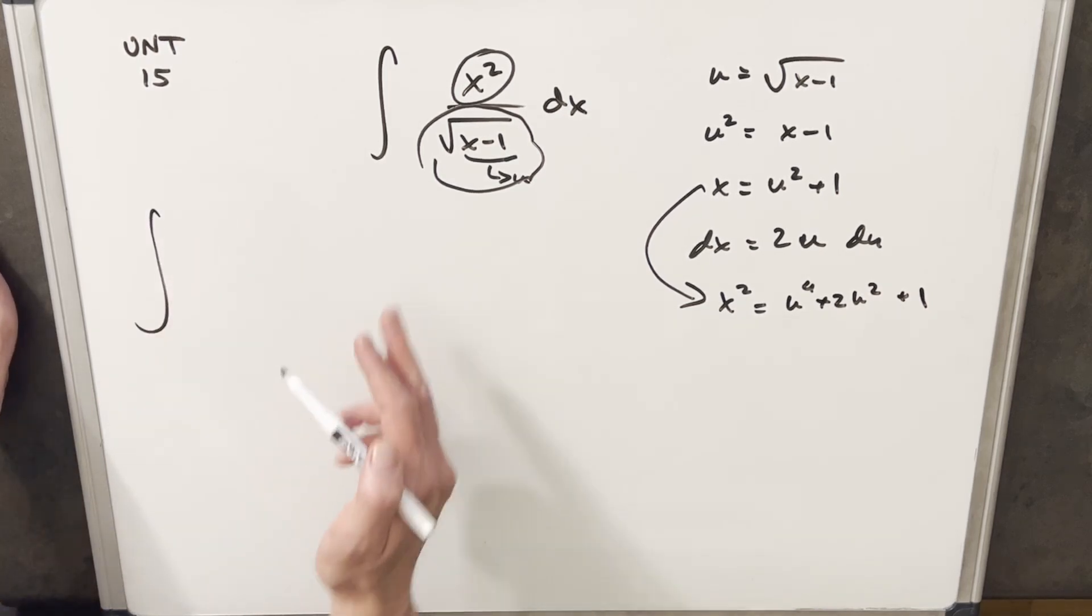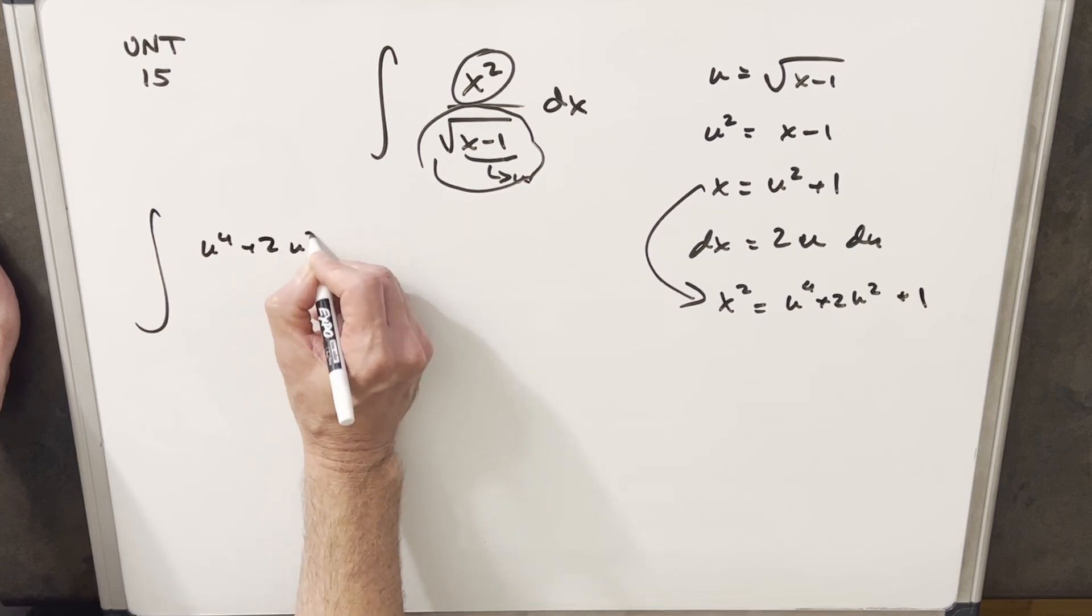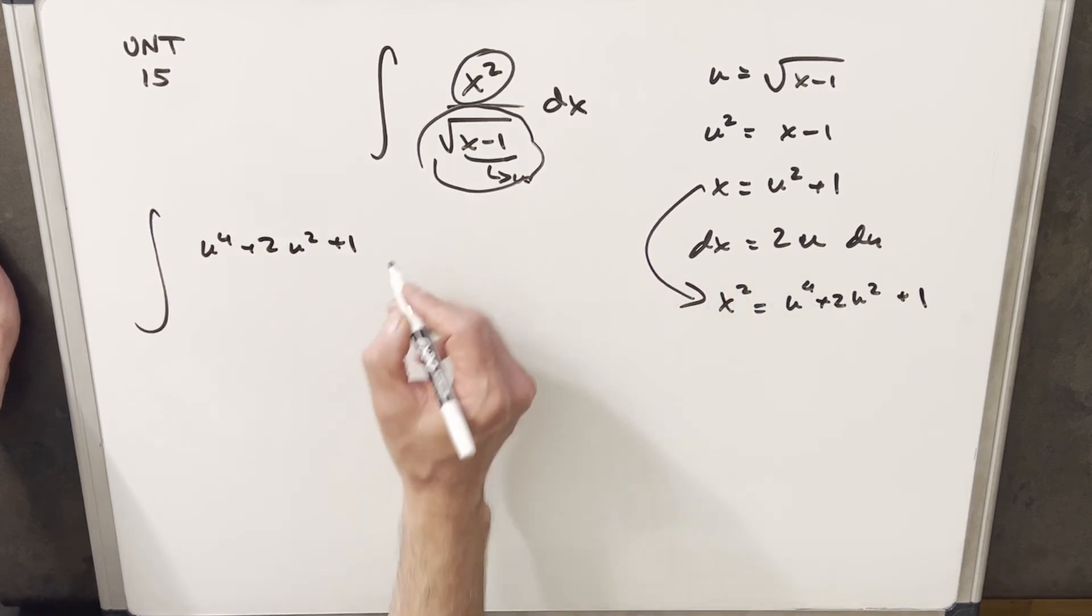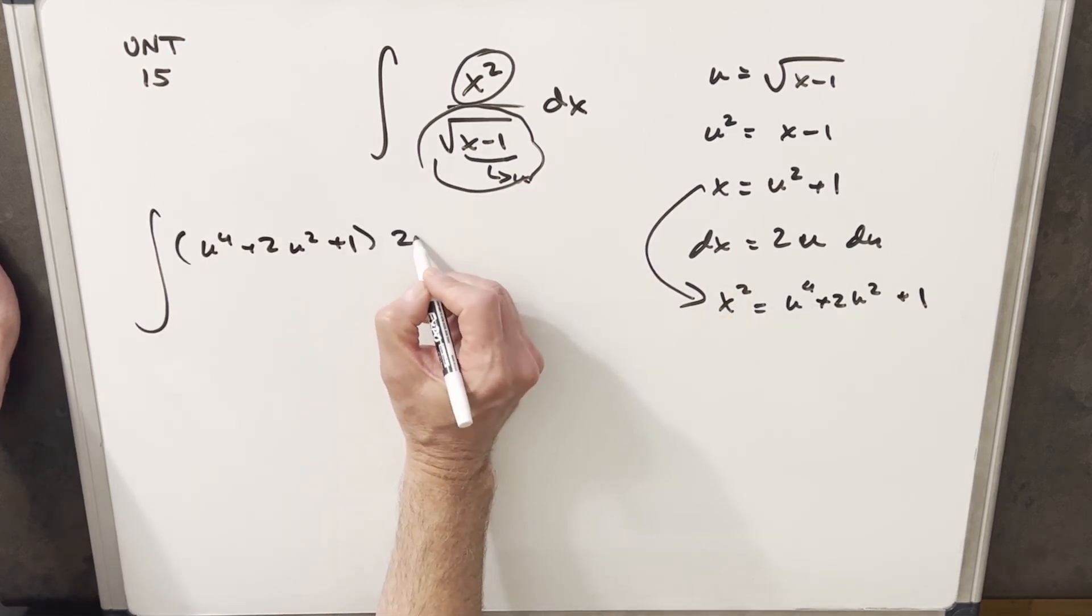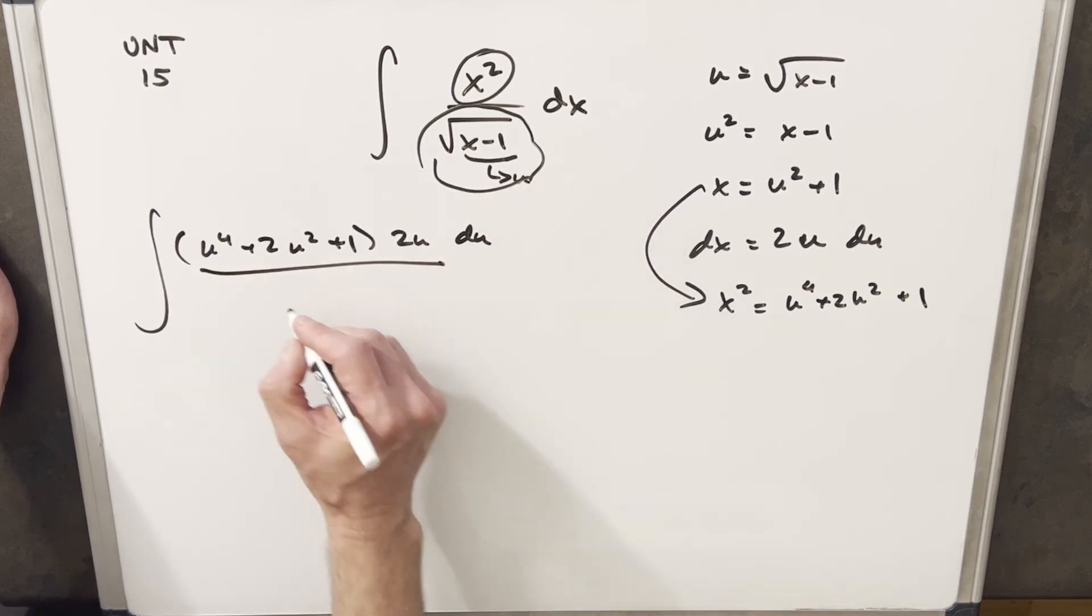And now I'm going to go ahead and make this substitution. So there's our x squared value. We'll have u to the 4th plus 2u squared plus 1. Our dx is going to be, let's see, we'll have 2u du. And then our denominator, real simple, is just going to be u.